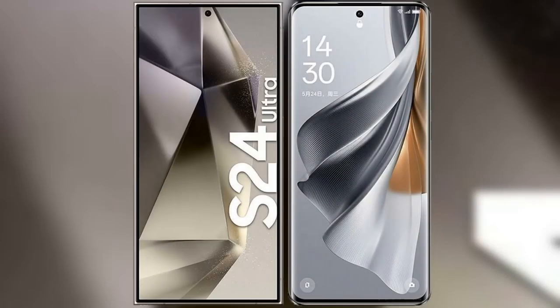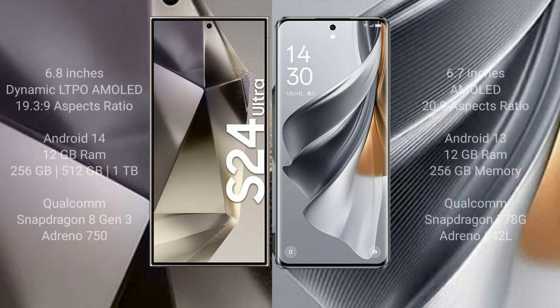I will compare the new Samsung Galaxy S24 Ultra with the Oppo Reno 10 Pro. The Samsung Galaxy S24 Ultra comes with a 6.8-inch Dynamic LTPO AMOLED display with an aspect ratio of 19.5:9, while the Oppo Reno 10 Pro comes with a 6.7-inch AMOLED display with an aspect ratio of 20:9.